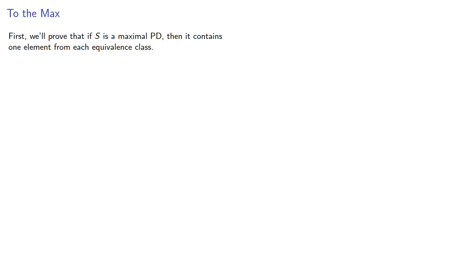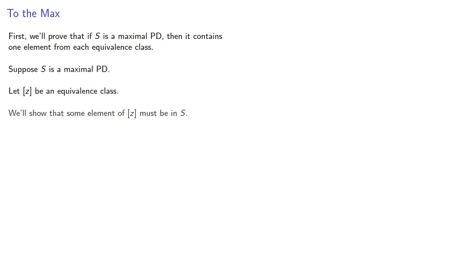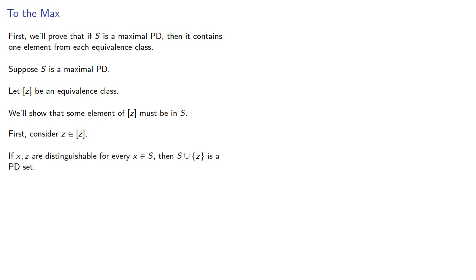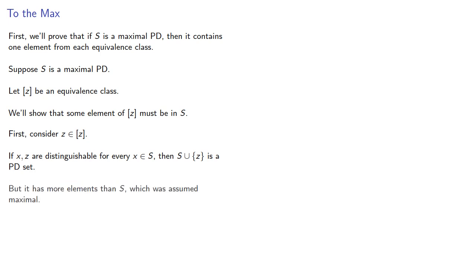Suppose S is a maximal pairwise distinguishable set. Let Z be an equivalence class. We'll show that some element of Z must be in S. Now the class representative is always in the equivalence class. If X and Z are distinguishable for every X in S, then S union Z is a pairwise distinguishable set, but it has more elements than S, which was assumed maximal.